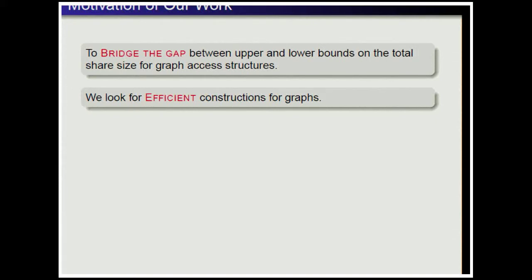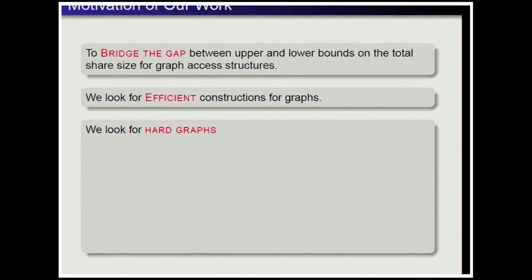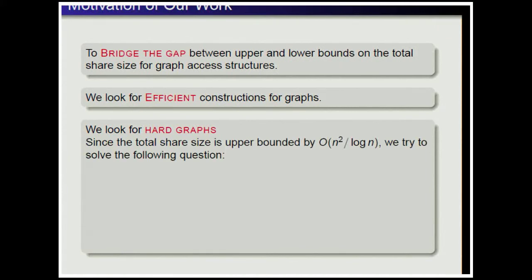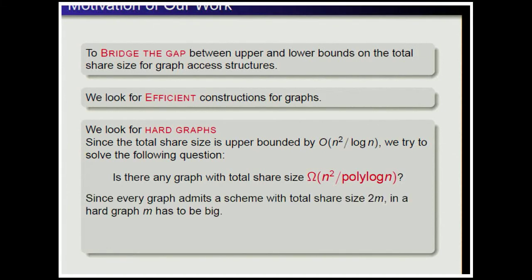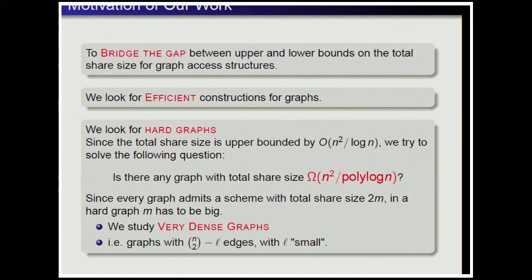Our main motivation was to bridge the gap between upper and lower bounds on total share size for graph access structures. We look for efficient constructions to improve upper bounds, and also for hard graphs. Since the total share size is upper bounded by big-O of N squared divided by log N, we ask: is there any graph with total share size big-Omega of N squared divided by polylog N? Since every graph admits a scheme with total share size 2 times the number of edges, a hard graph must have many edges, so we study very dense graphs — those with N-choose-2 minus L edges for small L.